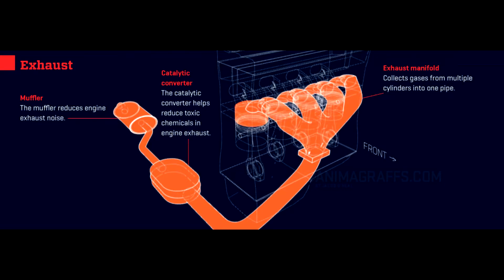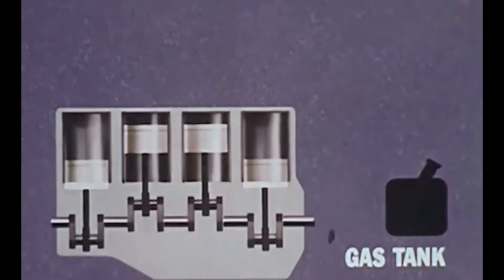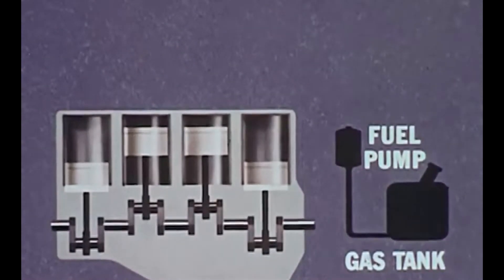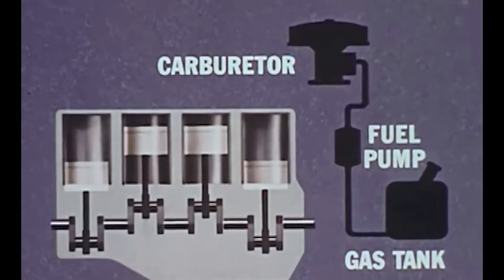And finally here's the full functioning engine with all the basic systems we've discussed. So now let's talk about carburetor and explain how cars are going faster and slower.